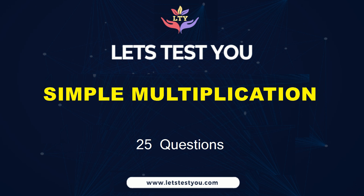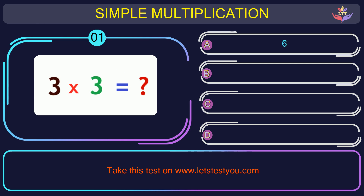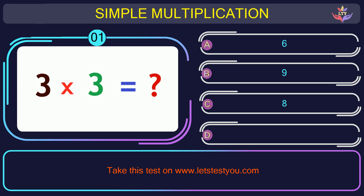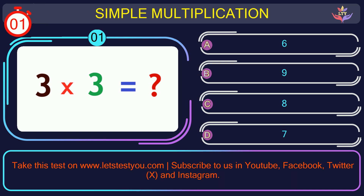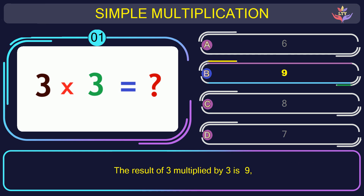Get ready to challenge yourself with 25 questions on simple multiplication. Question number 1: find the result when you multiply 3 by 3. The correct answer is option B: 9. The result of 3 multiplied by 3 is 9.